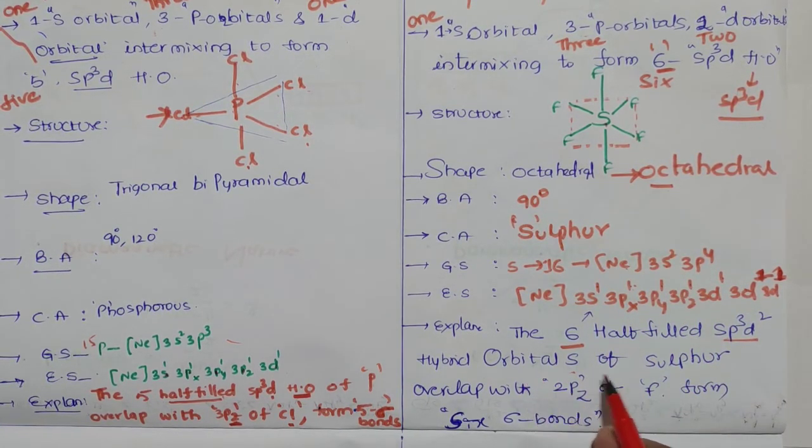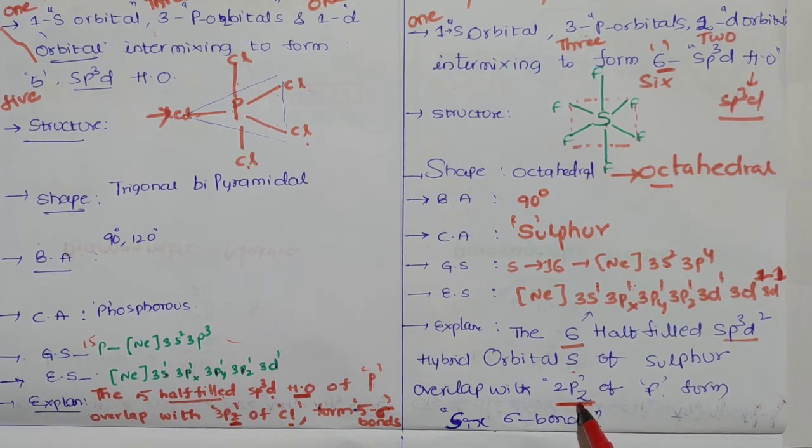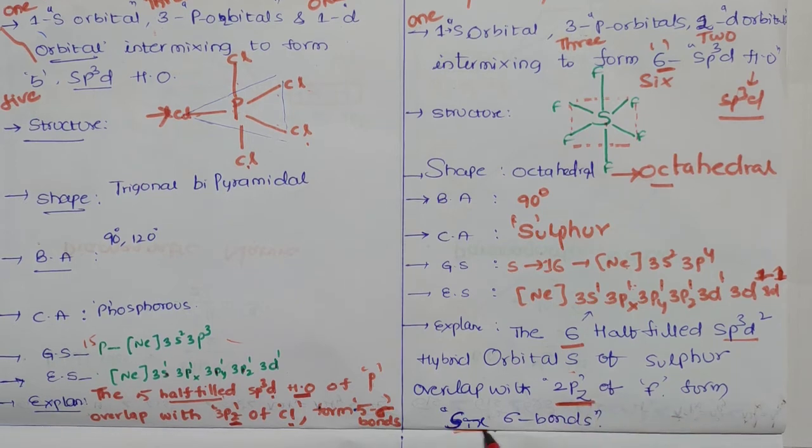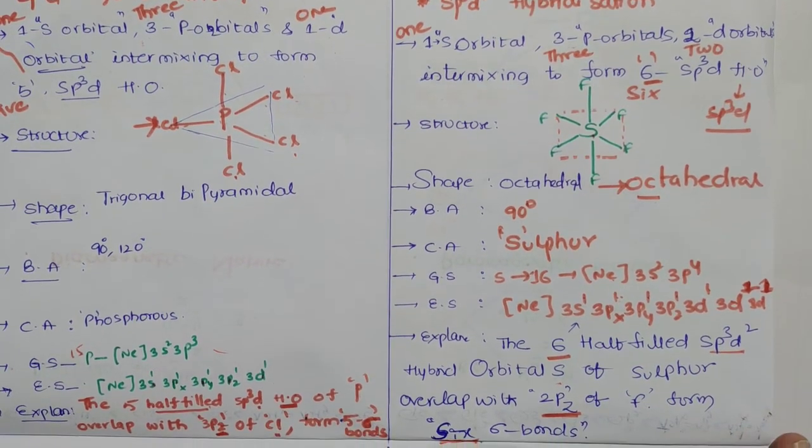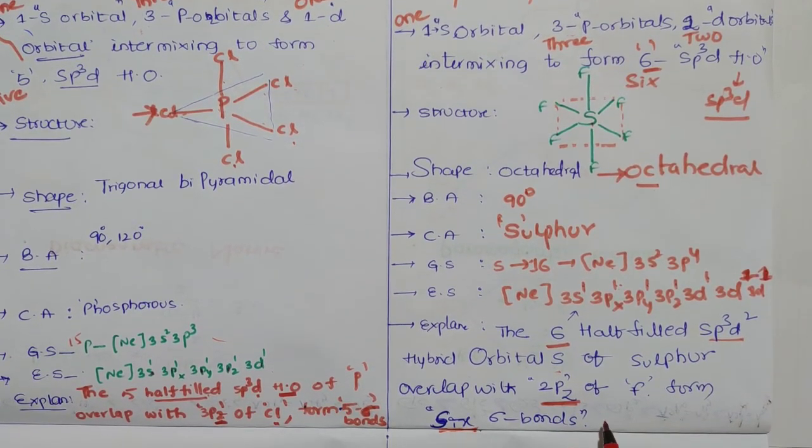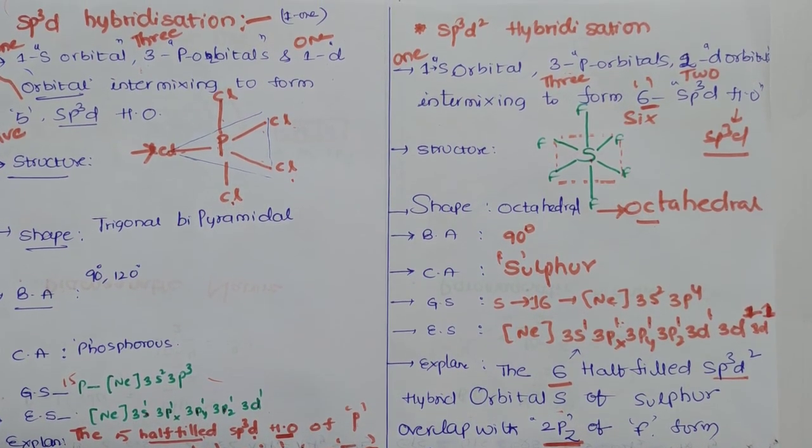The six sp³d² hybrid orbitals are now combined with or overlap with six pz orbitals of fluorine to give six sigma bonds. This is the video for you. Take the screenshot of sp³d² hybridization. Thank you. Share my videos to your friends and subscribe to my YouTube channel.